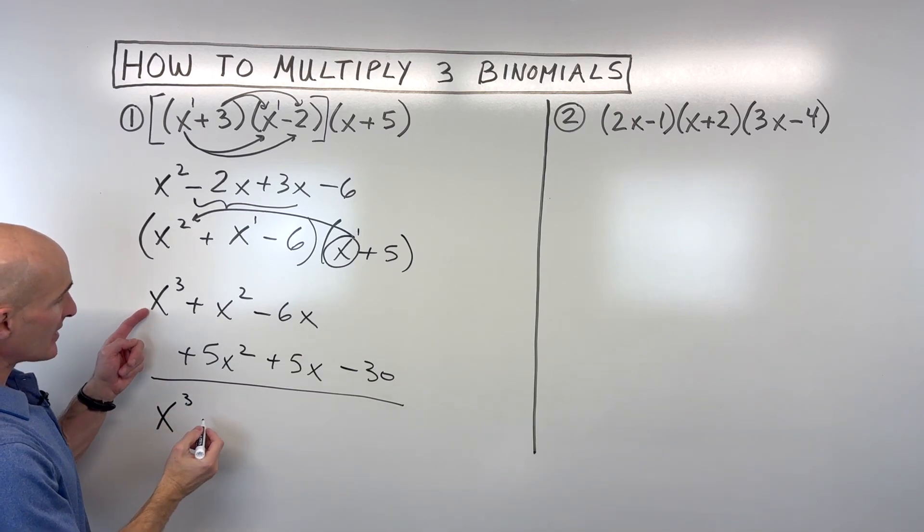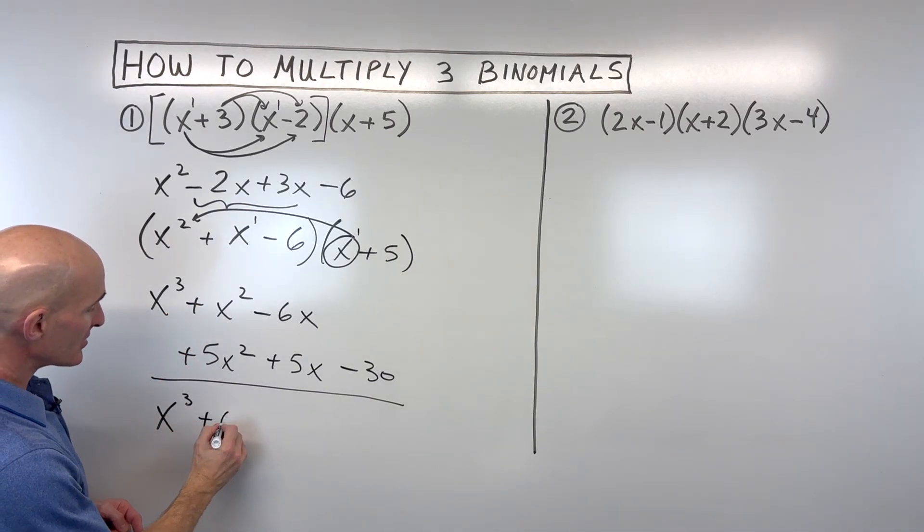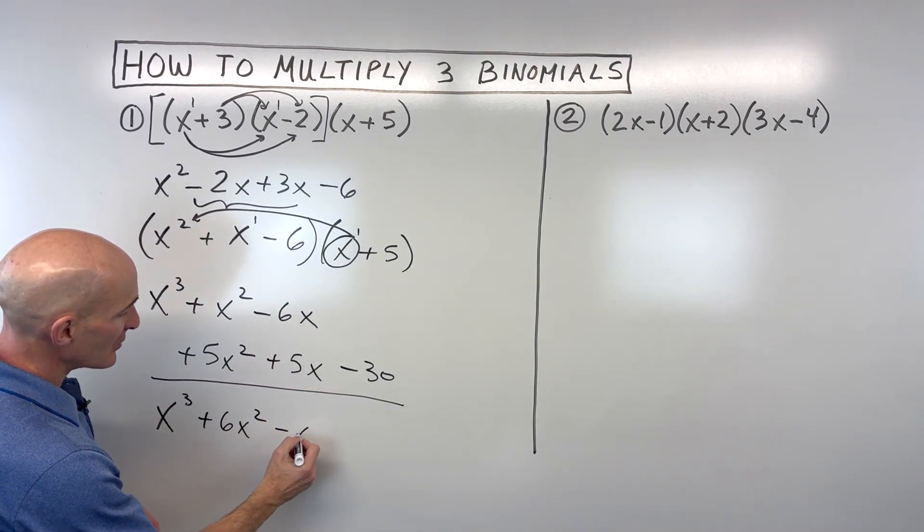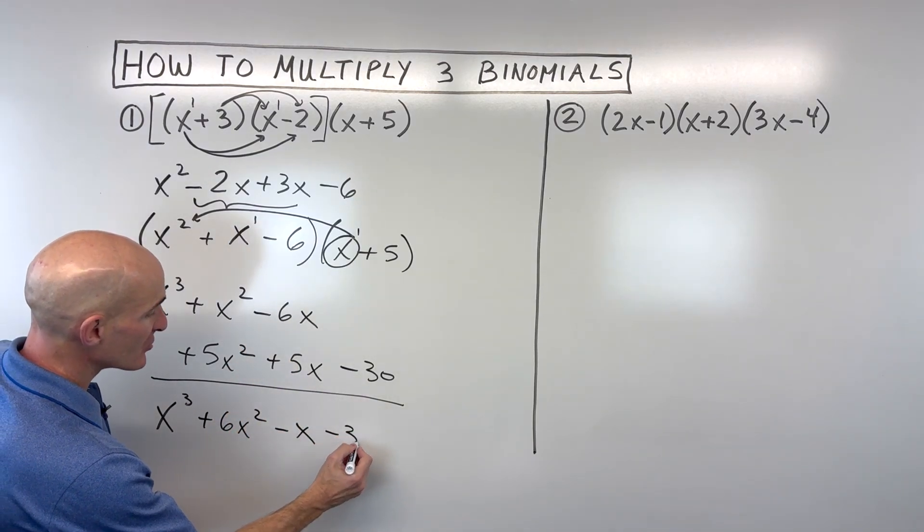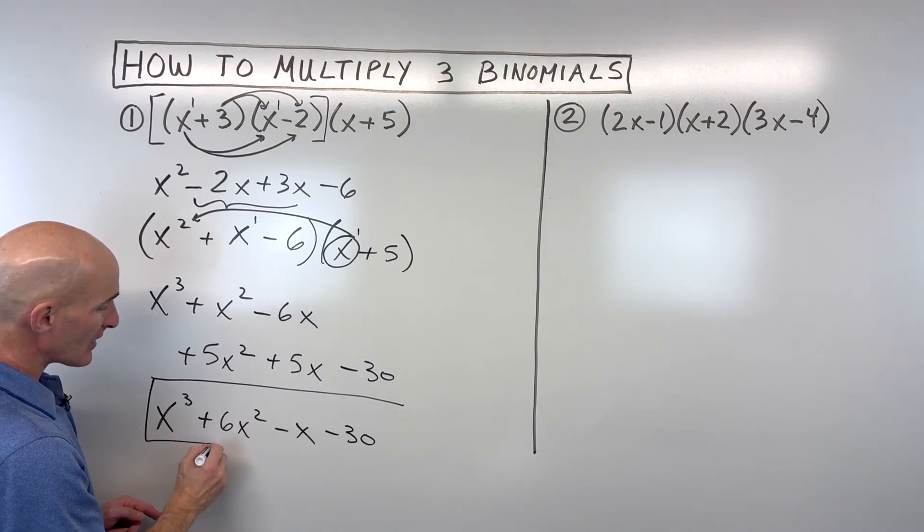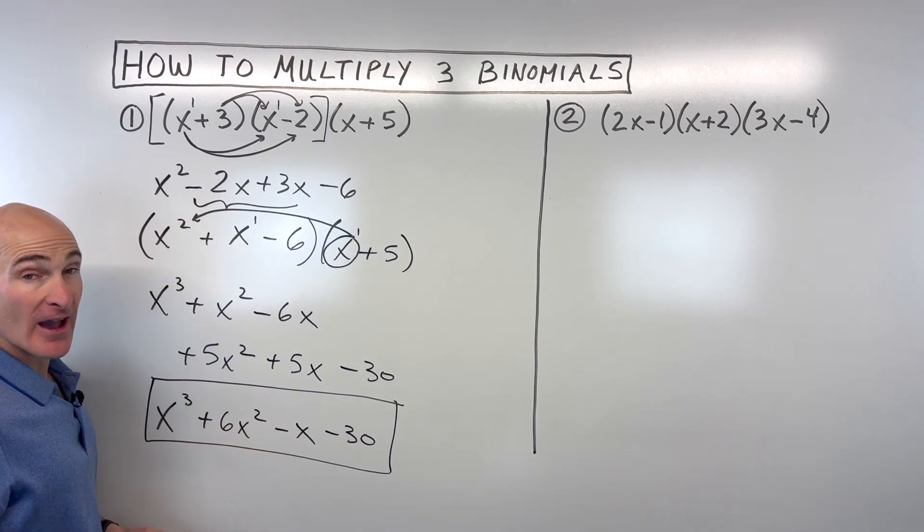So we've got x cubed. 1x squared plus 5x squared is 6x squared. Negative 6x plus 5x is negative 1x, and then minus 30. And again, you want to write it in descending order from the highest power down to the lowest, and that's your final result.